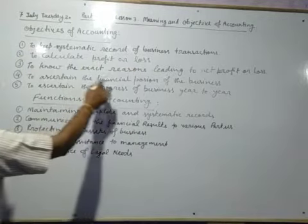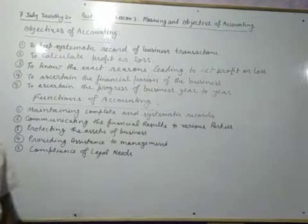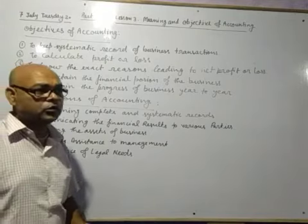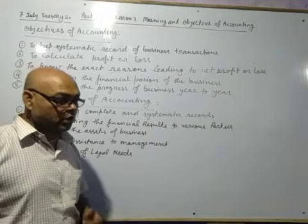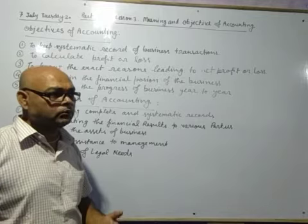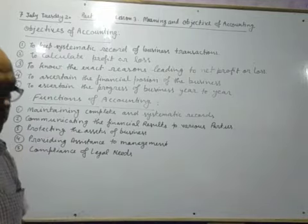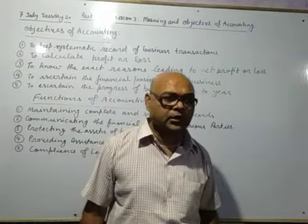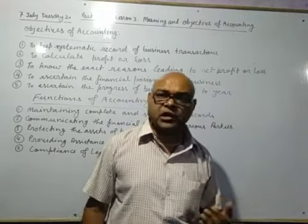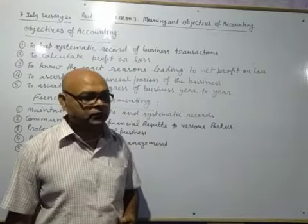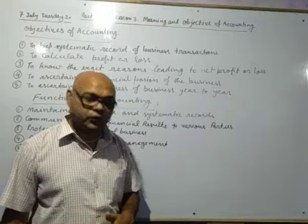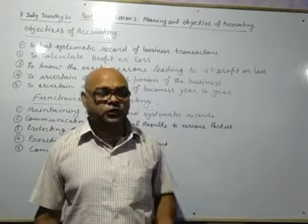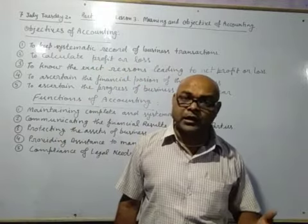Third: to know the exact reasons leading to net profit or loss. Accounting records help us to find out fraud or the misuse of money and assets. For example, a firm purchases a TV from Delhi; each set costs 8,000 and he is selling each TV at his shop for 10,000. So he is earning a profit of 2,000 per set. But it is possible that at the end of the year, the firm may come into a loss.